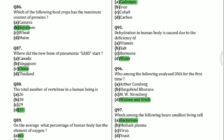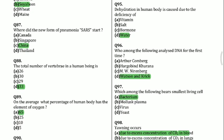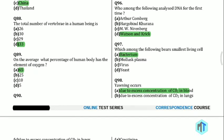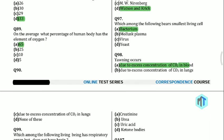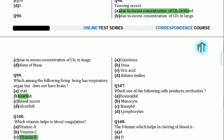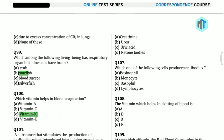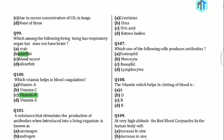Question 94: Kidney disorder is caused by the pollution of cadmium. Question 95: Dehydration in the human body is caused due to deficiency of water. Question 96: Who among the following analyzed DNA for the first time? Watson and Crick. Question 97: Which among the following bears the smallest living cell? Bacterium. Question 98: Yawning occurs due to excess concentration of CO2 in blood. Question 99: Which living being has a respiratory organ but does not have a brain? Starfish. Question 100: Which vitamin helps in blood coagulation? Vitamin K. That's all 100 MCQs, thank you.